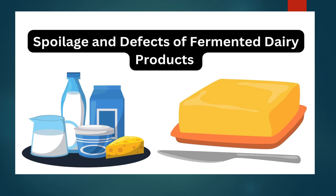Spoilage and defects in fermented dairy products like yogurt, acidophilus milk, curd, kefir, and kumiss are discussed here. All these products should be kept under refrigeration and have limited shelf life. Most are in acidic condition, so they are partially safe, but acid-tolerant bacteria and yeasts can grow after some time. For yogurt, the shelf life may be up to 5 to 7 days in the refrigerator, after which acid-tolerant bacteria, yeasts, or molds can grow, and there could also be over-fermentation with very high acid production.